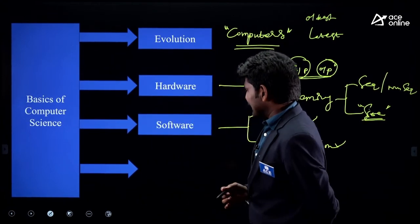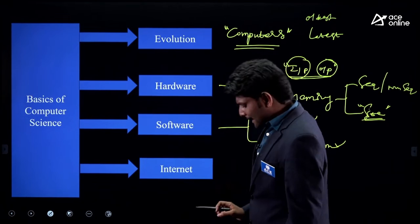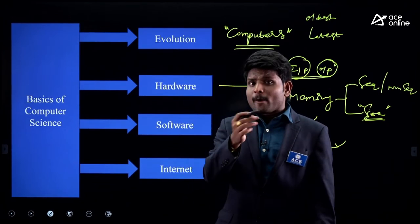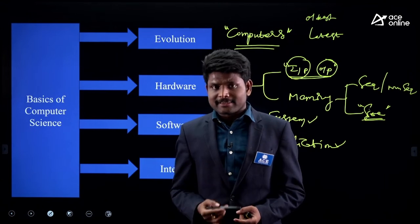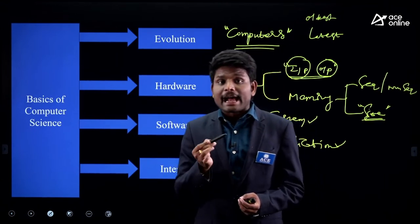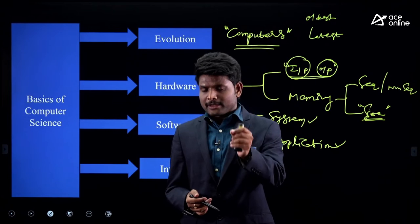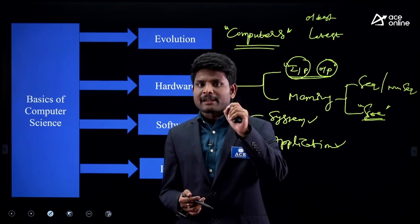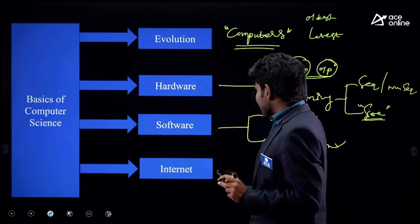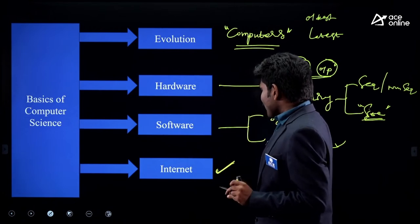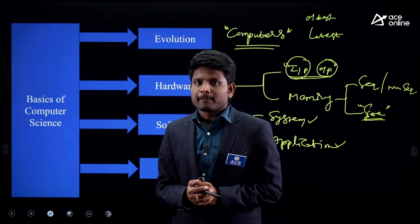The fourth topic is internet. In the RRB JE syllabus, there are other subjects like web technologies and data communication networks. If you are a computer science student who studied computer networks in graduation, you can easily answer any question from this topic, because there are no in-depth questions from this particular topic.